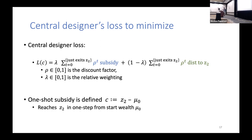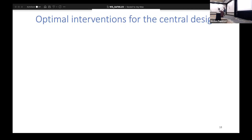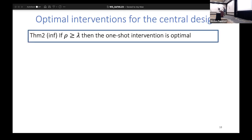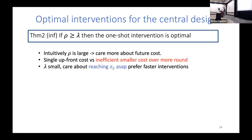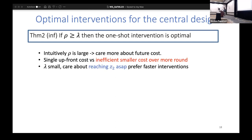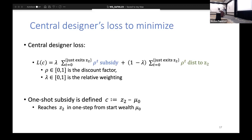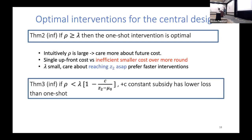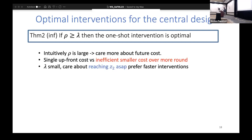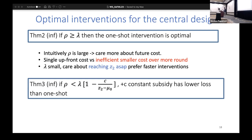With that defined, here are some optimal interventions that we proved. If your discount factor ρ is greater than the relative weighting λ, then one-shot is optimal. Some intuition for this: if you care a lot about future costs, like for example ρ is one, then single upfront costs are better. Why would you spend inefficient smaller costs over more rounds? Similarly, if λ is small - recall (1-λ) is the distance to z₂ - so λ small means you want to reach z₂ as soon as possible, which is why one-shot is optimal here. Another theorem is that if ρ is less than λ times (1-c)/(z₂ minus your starting wealth), then plus c constant subsidy has lower loss than one-shot.